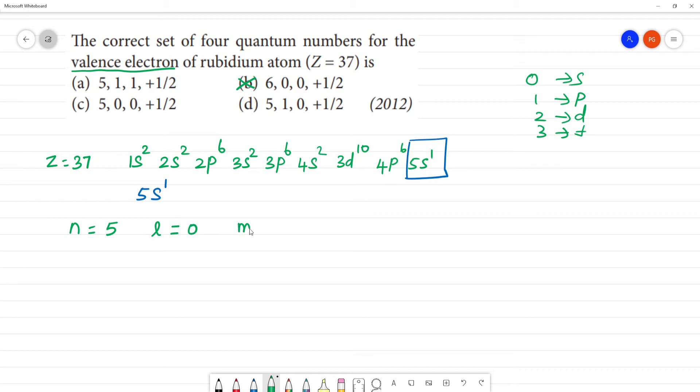If L is equal to 0, then M is equal to 0. Since there is one electron, S is plus half. So the answer is 5, 0, 0, and plus half.